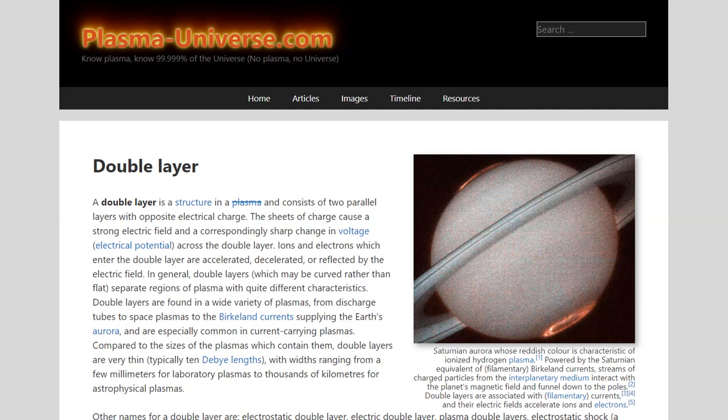Now, these double layers correspond to sharp change in voltage or electrical potential across the double layer. Ions and electrons which enter the double layer are accelerated, decelerated, or reflected by the electric field. And in general, double layers, which may be curved rather than flat, separate regions of plasma with different characteristics.